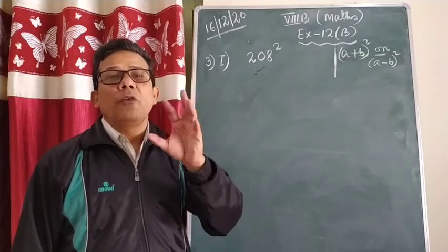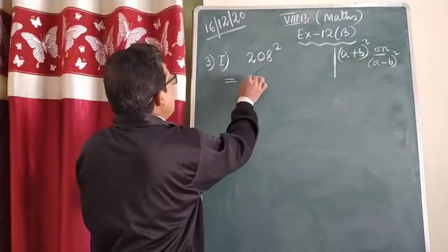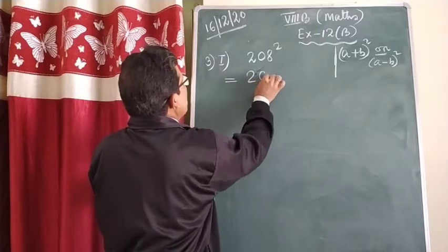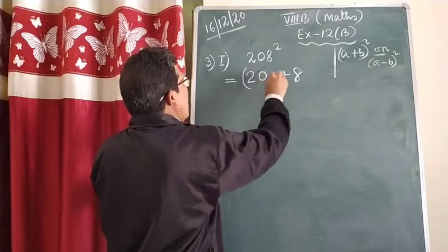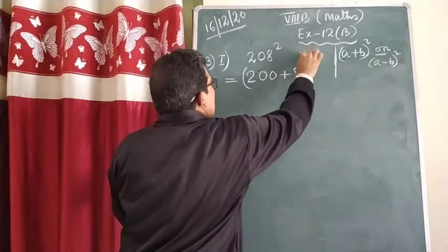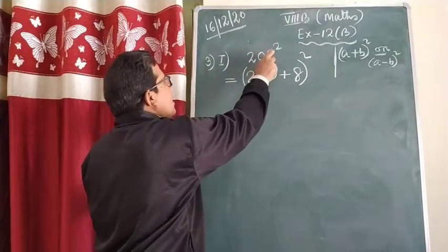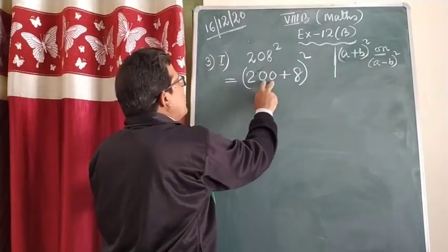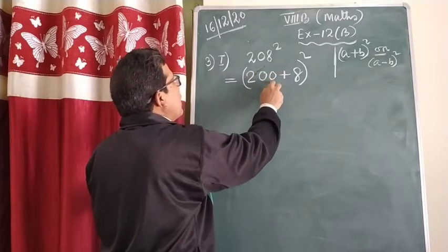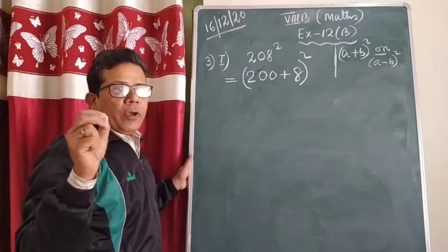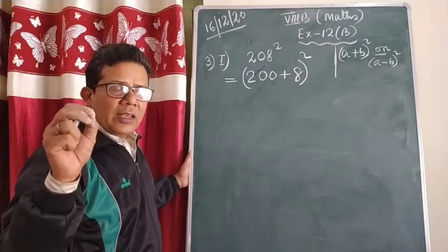That will be very easy for you to do the calculation. So 208, without changing the value, I write it as (200 + 8)². You may ask: sir, why have you taken 200? Because for the bigger number, if the unit place is zero, it will be very easy for you to do the multiplications.